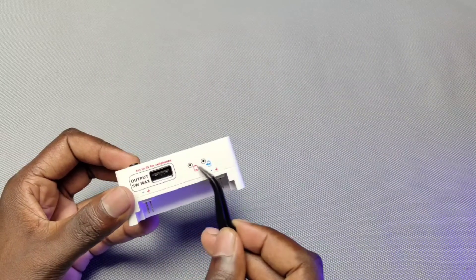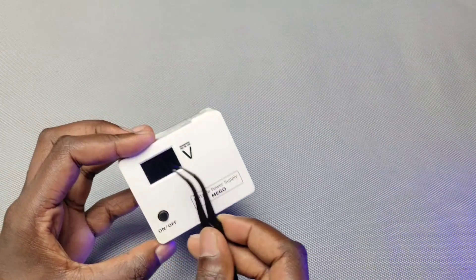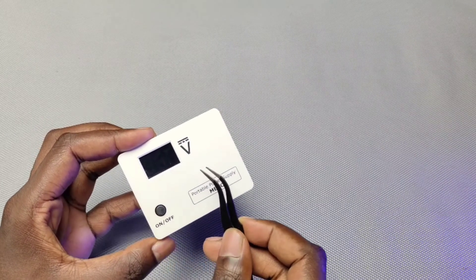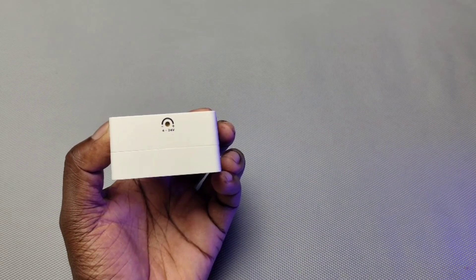These two LEDs indicate the charging and discharging status of Mego. On the top side, we can see the on-off switch and a small 7-segment display for displaying the output voltage. Finally, in rear, we can see a slot to adjust the voltage.